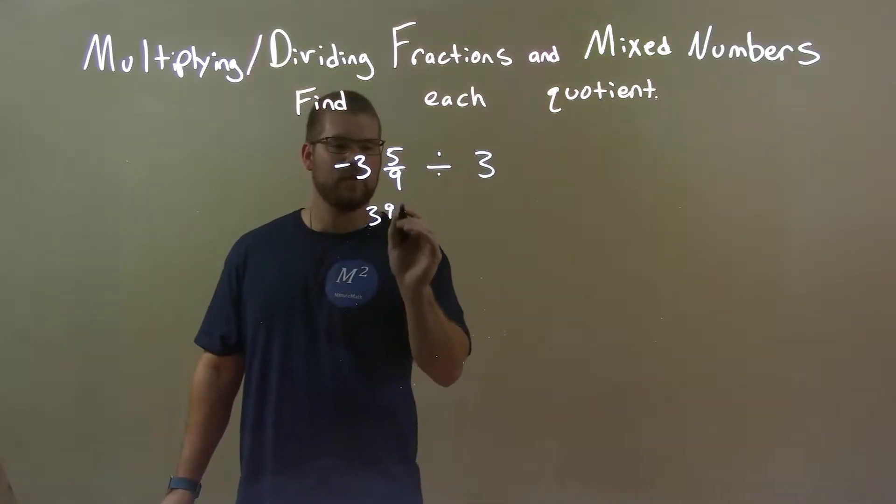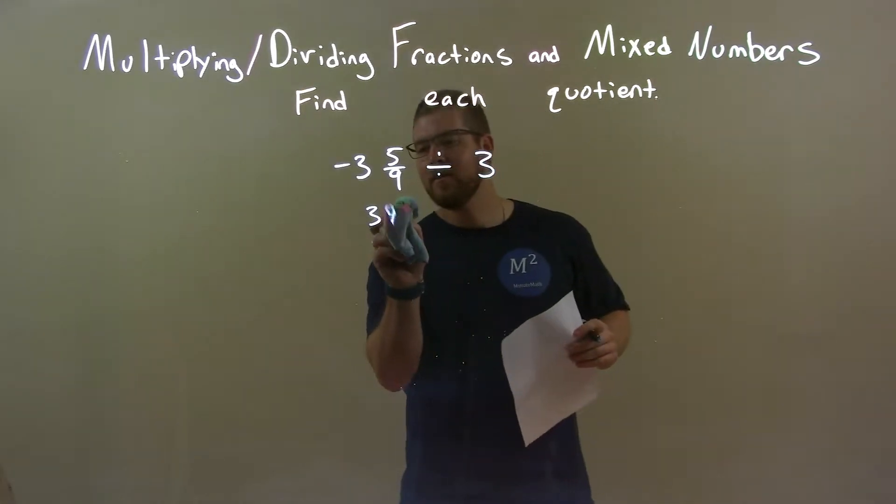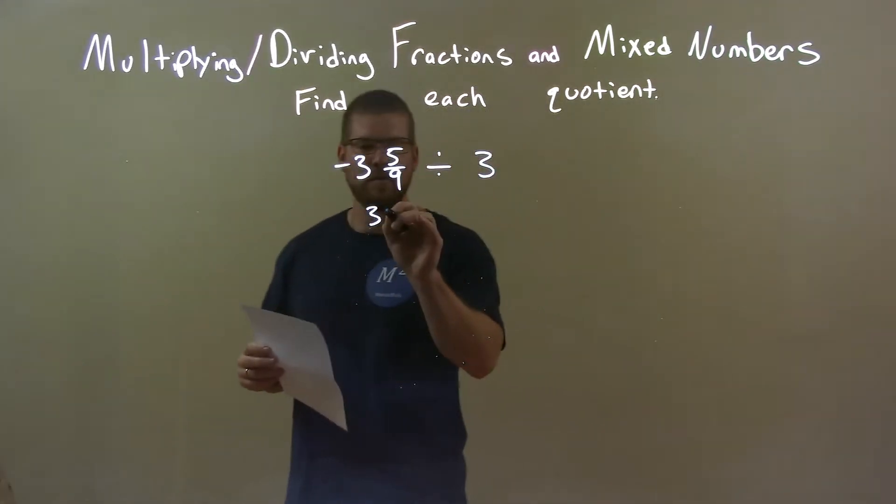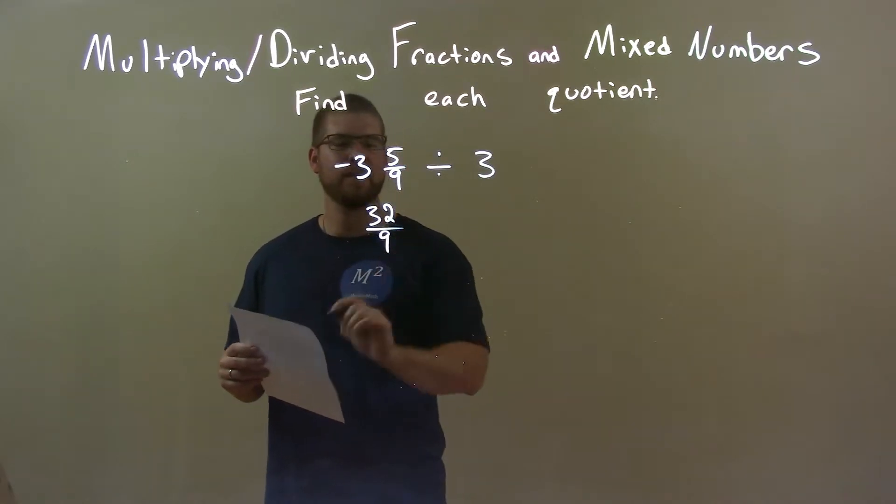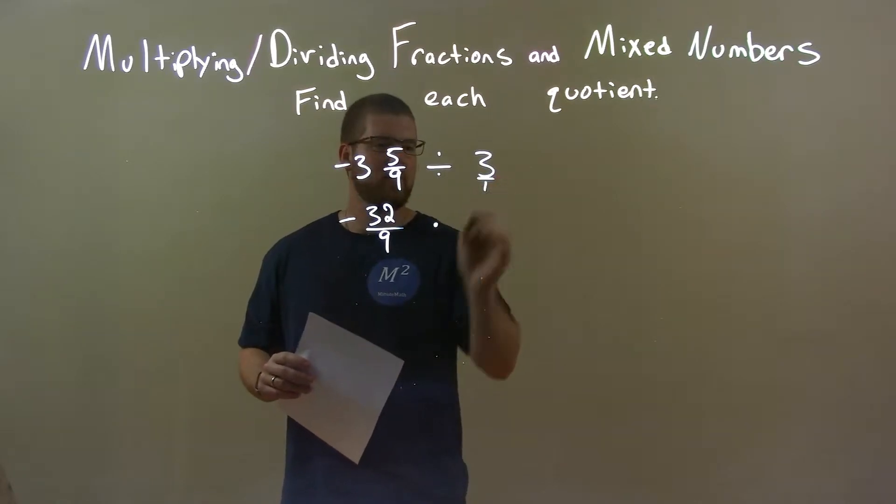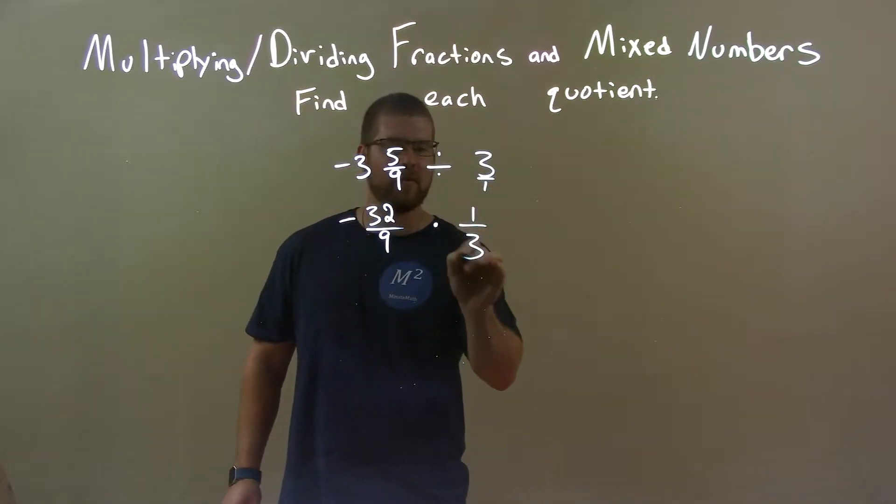So we have 32, that's a 39. I want 32, careful there. 32 over 9, and we keep that a negative. Now instead of dividing by 3, we know it's 3 over 1, I'll multiply by 1 third.